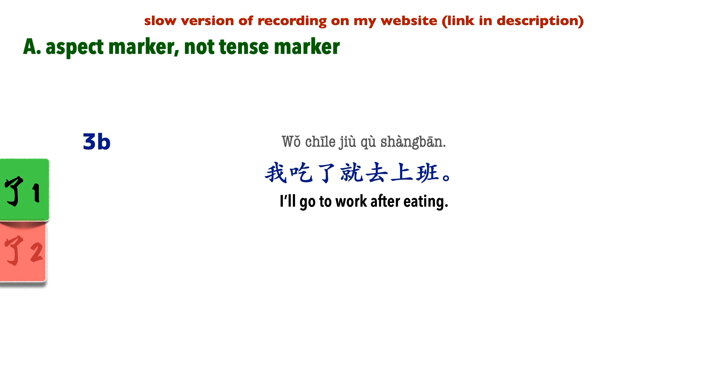And this completion could happen in a past or future. So, in this example, 勒 still indicates completion of the verb 吃, but that action of eating has yet to be completed. It's simply saying that when the action of 吃 is complete, I'll go to work. So, in fact, in this sentence, I've not gone to work, neither am I done with eating.